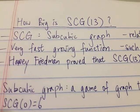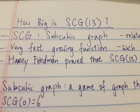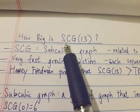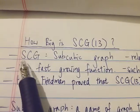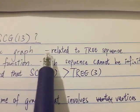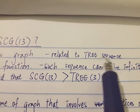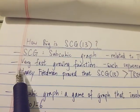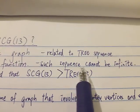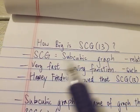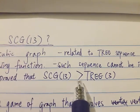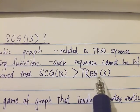Hi everyone. Today I'm going to talk about another very, very big number — SCG(13). SCG stands for Subcubic Graph Number. It is related to the famous TREE sequence and is a very fast-growing function. However, such a sequence cannot be infinite. It has been proved that SCG(13) is way bigger than even TREE(3).